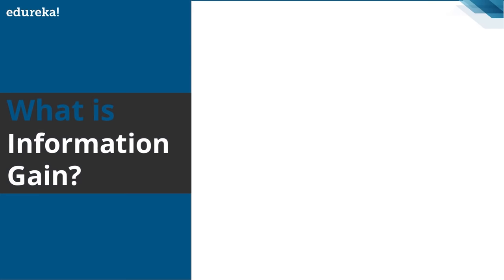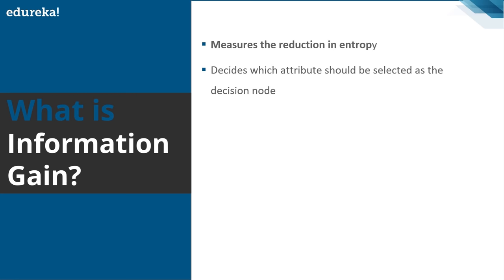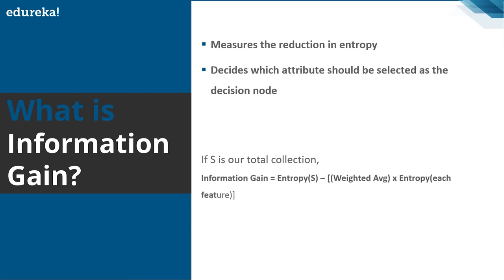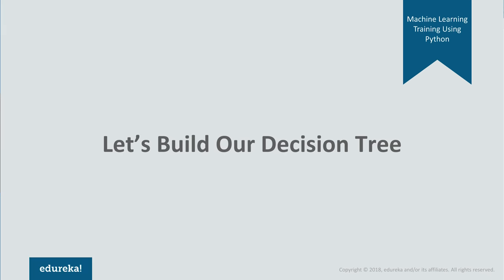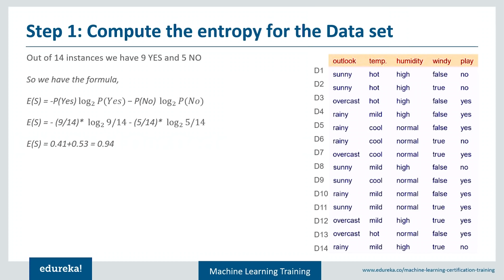Information gain measures the reduction in entropy and decides which attribute should be selected as the decision node. The formula is: Information Gain = Entropy(S) − weighted average × Entropy of each feature. For our dataset with 14 instances — 9 yes and 5 no — the total entropy equals −(9/14)·log₂(9/14) − (5/14)·log₂(5/14), which gives 0.94. This is the first step: compute entropy for the entire dataset.